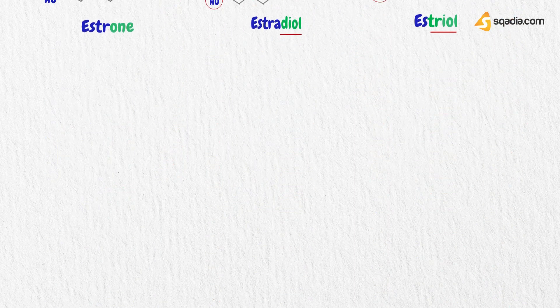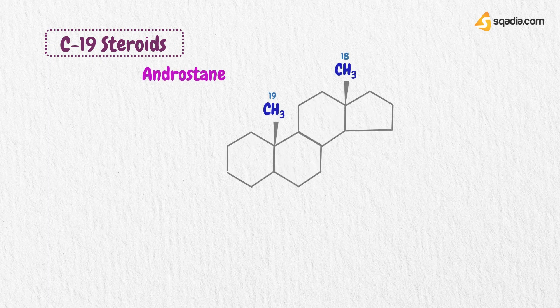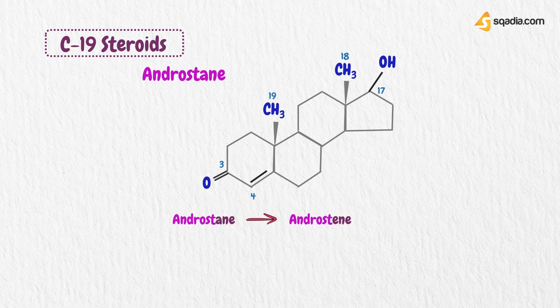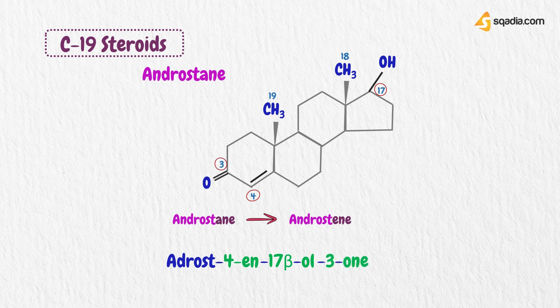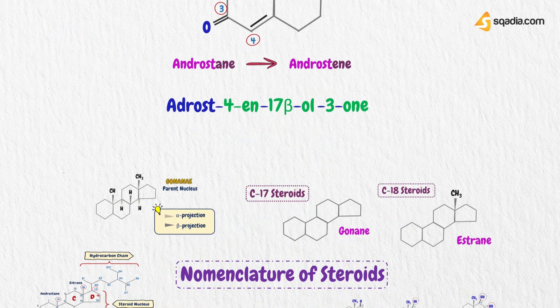Now we will discuss C19 steroids. It has 19 carbons and the androstane nucleus. One of its hormones is testosterone. As you can see here, it has a ketone group at position 3, a double bond at position 4, and an alcohol group at position 17. Testosterone is derived from androstane, but since androstane has a double bond at position 4, it converts it into androstene. So testosterone can be written as androst-4-en-17-beta-ol-3-one: 4-ene because of the double bond, 17-beta-ol because the hydroxyl group is attached at position 17 in beta orientation, and 3-one because the ketone group is present at position 3.